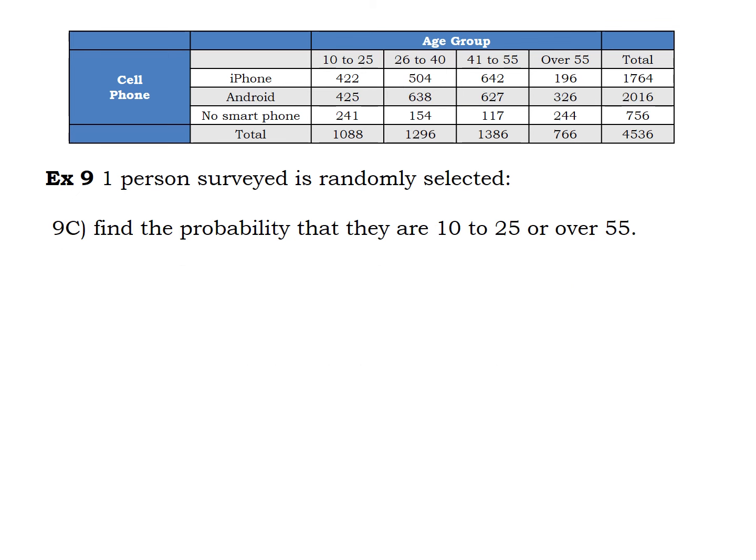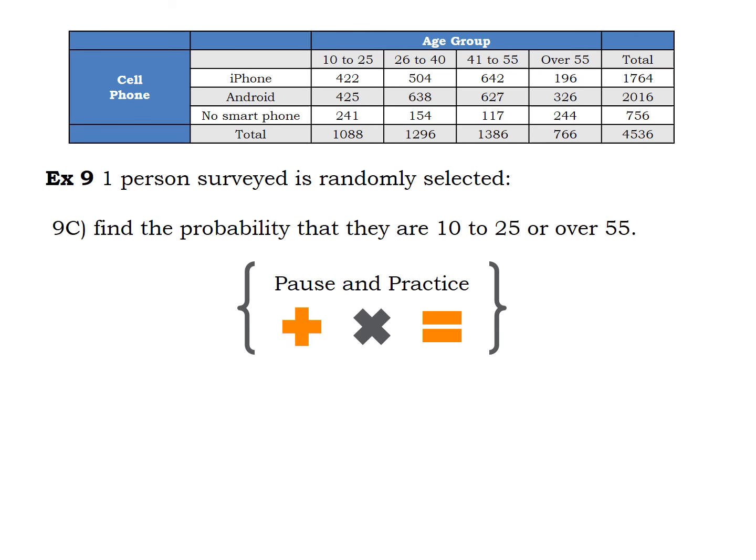Now the last problem: we want the probability that a person is in the 10 to 25 age group or over 55. Pause and practice — first write out the formula in the context of the problem, then get your numbers.